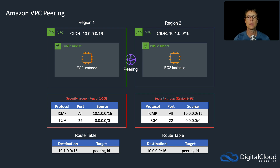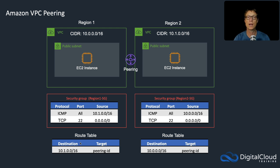In this lesson we're going to set up VPC peering between two regions. In each region we'll have a custom VPC with specific CIDR blocks. We'll create two VPCs in different regions, have a public subnet, launch EC2 instances into those public subnets, update our route tables, set up our security groups, and then try to ping these instances using private addresses.